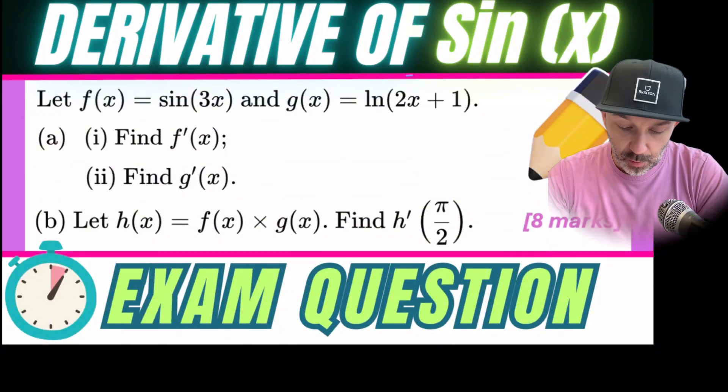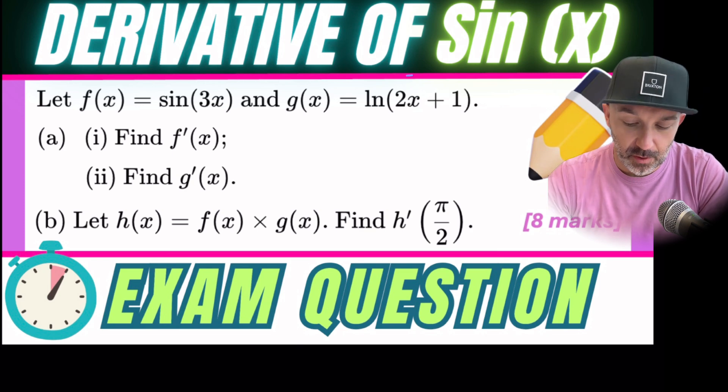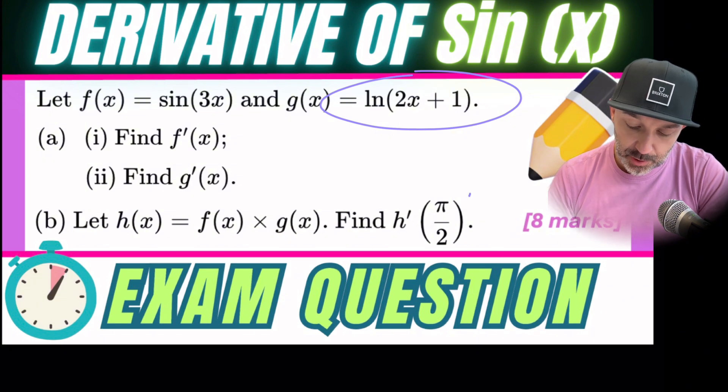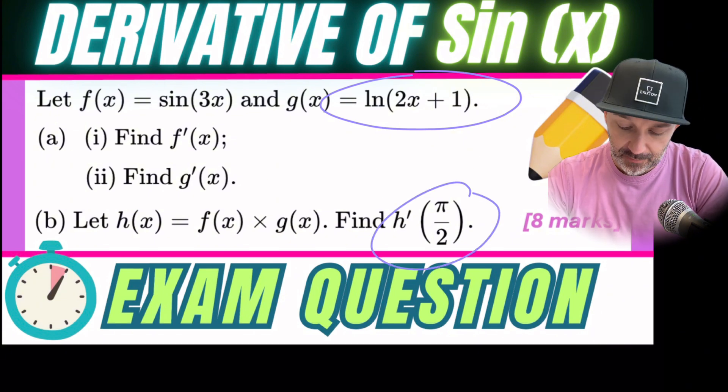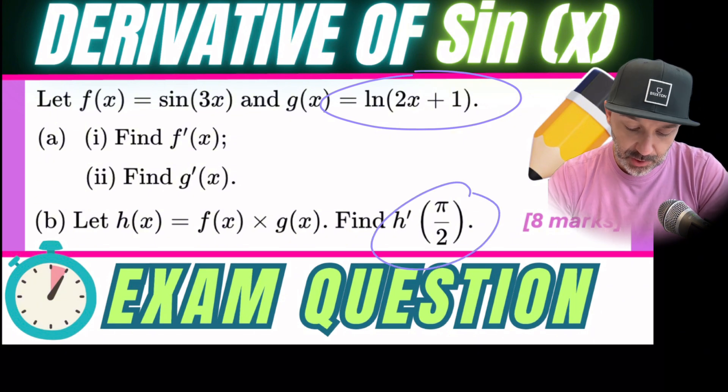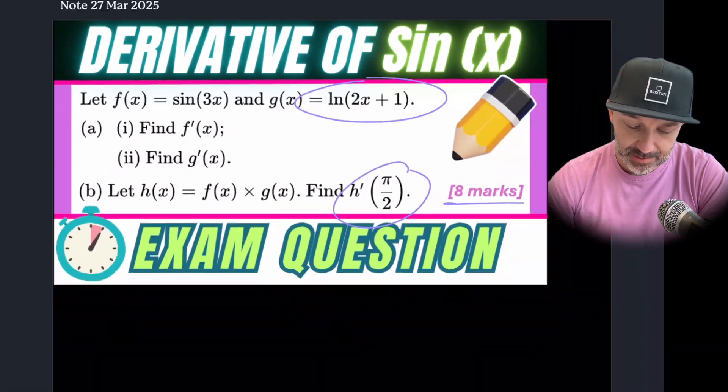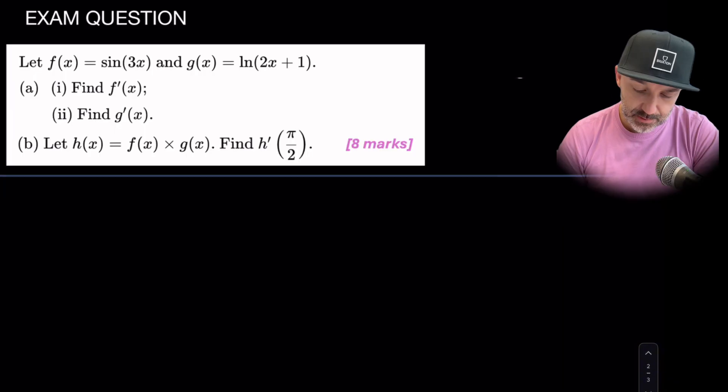Welcome back. In today's exam walkthrough we're going to look at a derivative of a trig function sine x and also involves a natural log. It looks like towards the end of the question we're going to have to substitute a value in. That value is in radians and it's worth eight marks. We should be able to do this question in eight minutes or less. Okay let's move down. Start the clock.